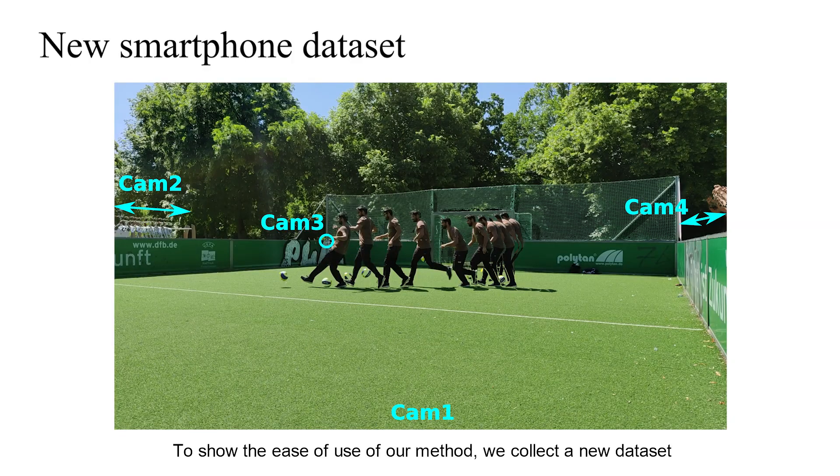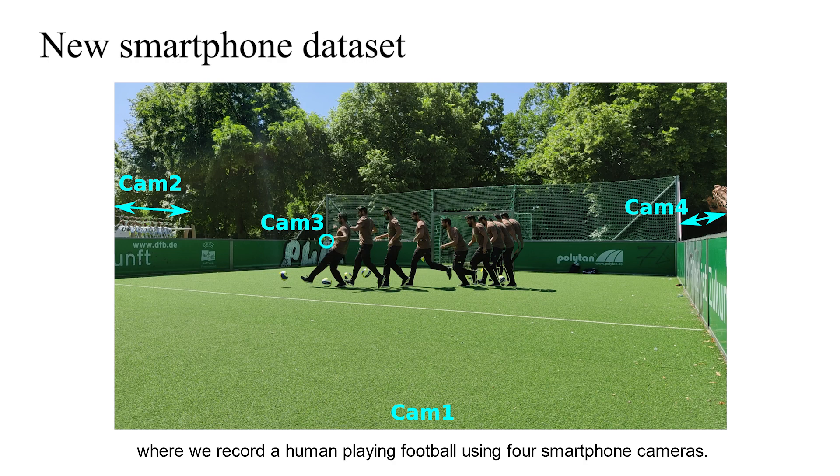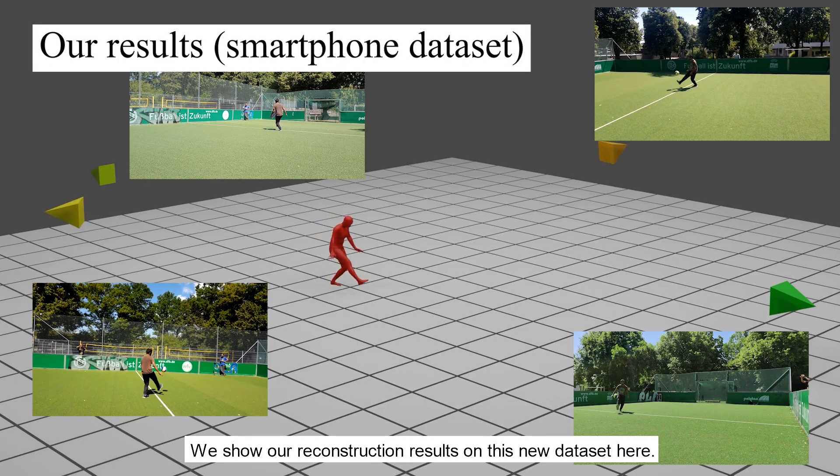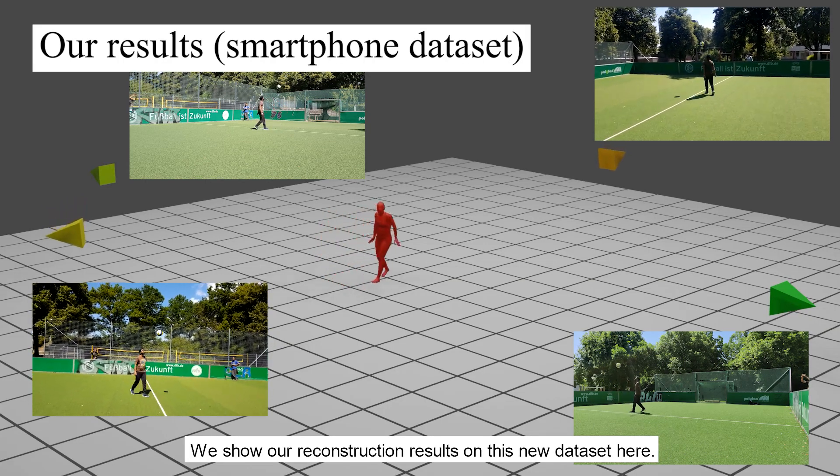To show the ease of use of our method, we collect a new dataset where we record a human playing football using four smartphone cameras. Two of them were kept static, while the other two were moving. We show our reconstruction results on this new dataset here.